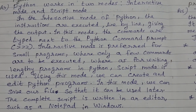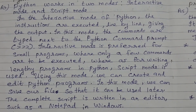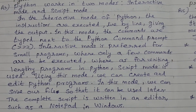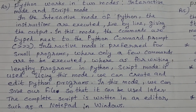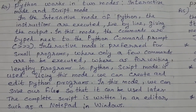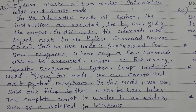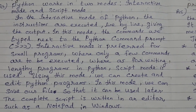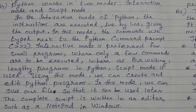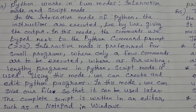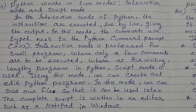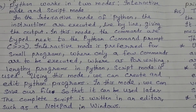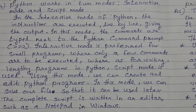Repeating the answer: Python works in two modes — Interactive mode and Script mode. In interactive mode, instructions are executed line by line, giving the output, and commands are typed next to the Python prompt. Interactive mode is preferred for small programs. For lengthy programs, script mode is used — we can create, edit, and save files. The complete script is written in an editor such as Notepad in Windows.